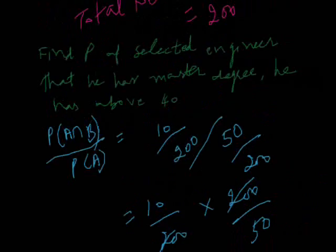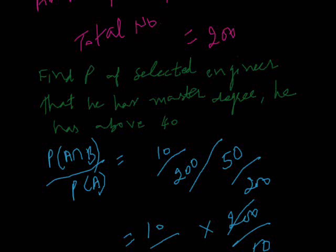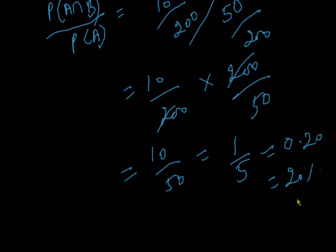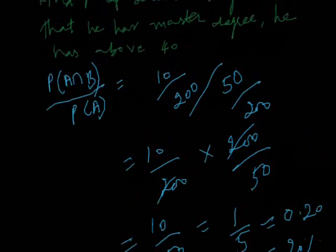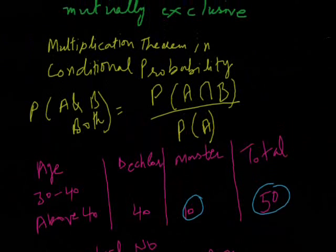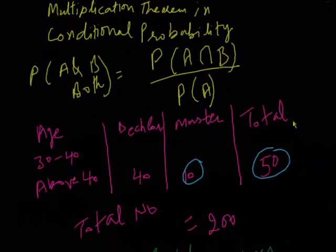So, probability of a selected engineer that has a master's degree given the condition he is above 40 is 20% chance. Like this we can calculate different conditional probabilities.